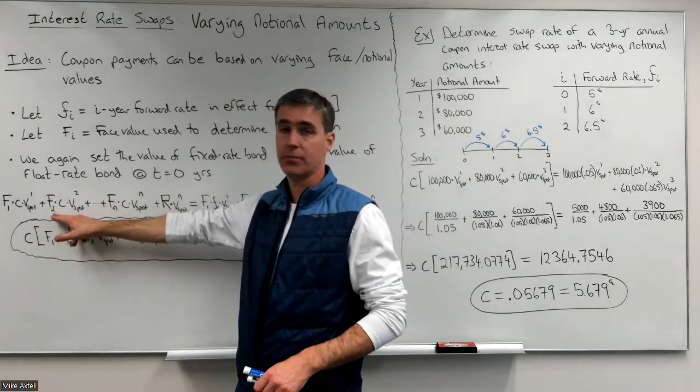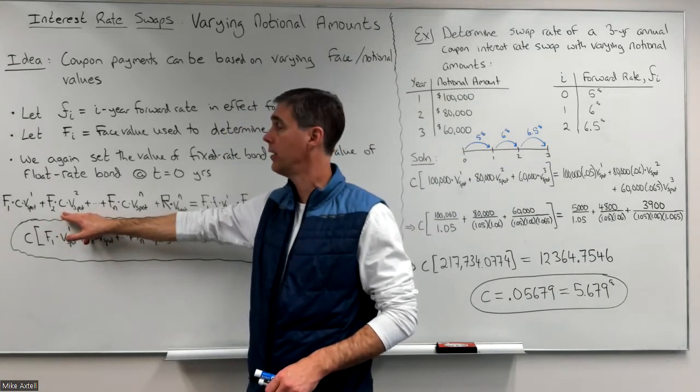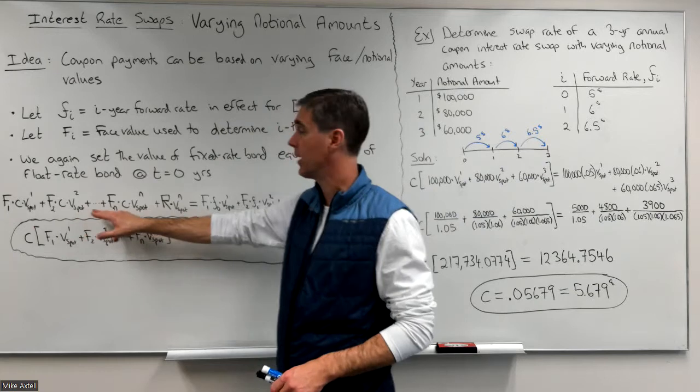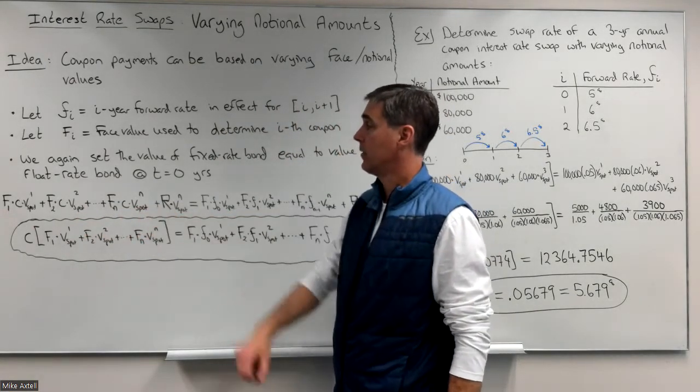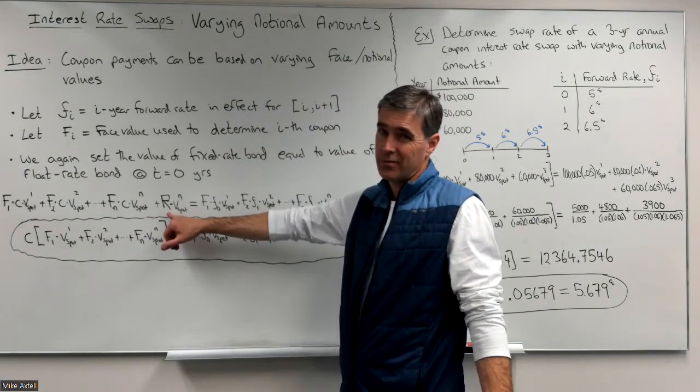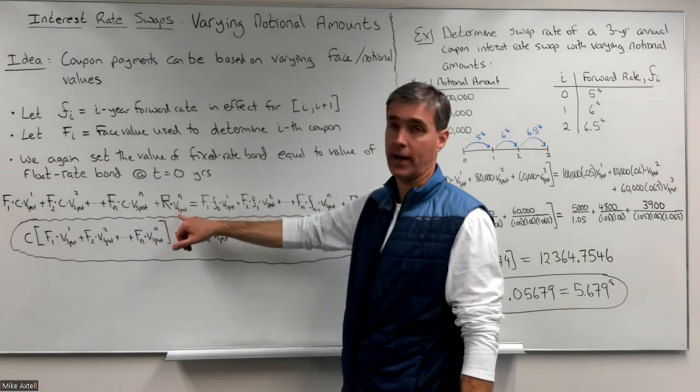Second coupon's notional amount is F sub two. We multiply that by C to get the dollar amount of the second coupon, drag that back two years and continue. There's the nth coupon, drag back n years. And then there's the redemption value, which I don't care about. I'll say why in a moment, drag back n years.